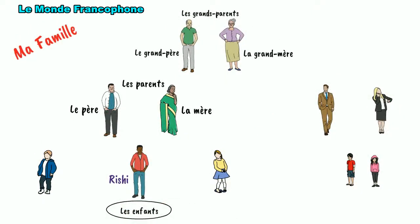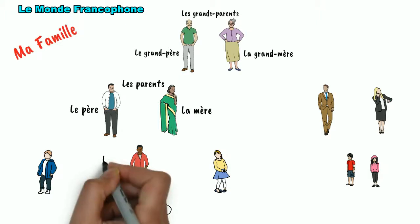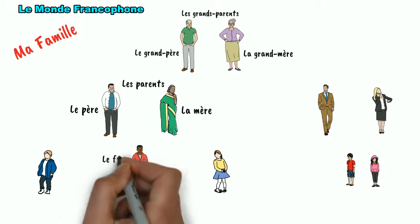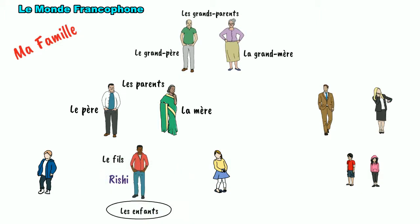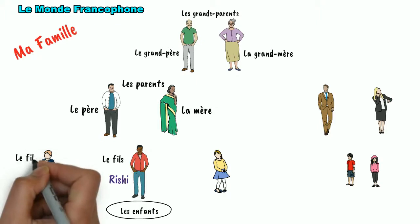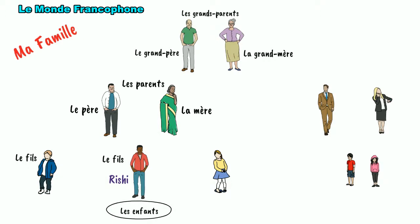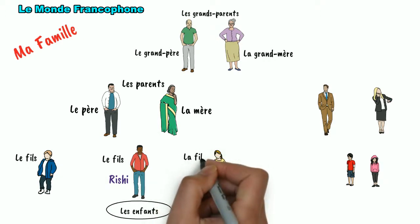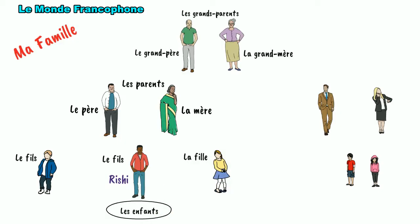Now Rishi is a son in this family. So son is called le grand-père. His brother will also be le grand-père for his parents. And Rishi's sister will be daughter. So daughter in French is la grand-père.